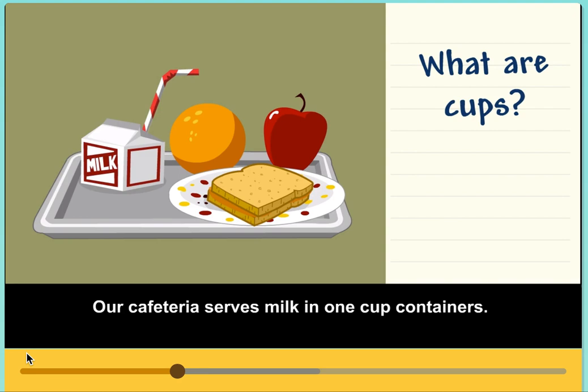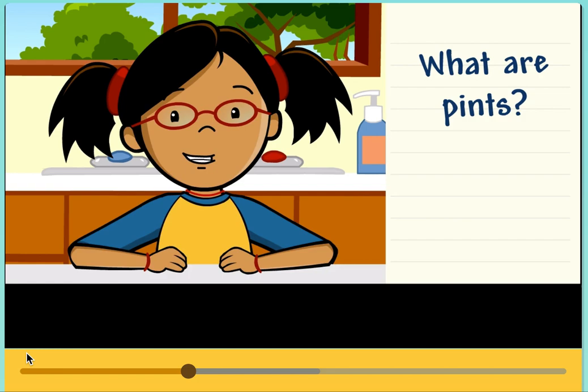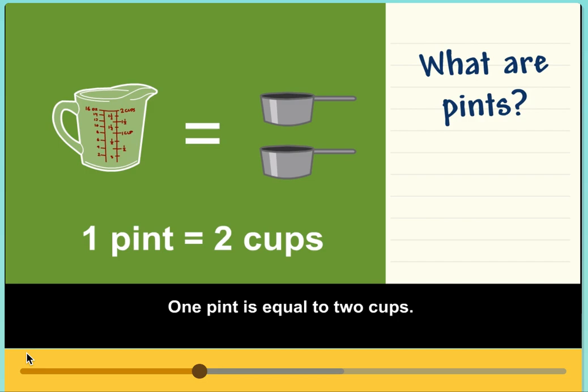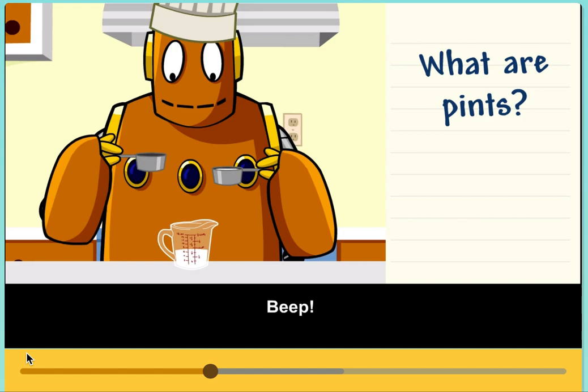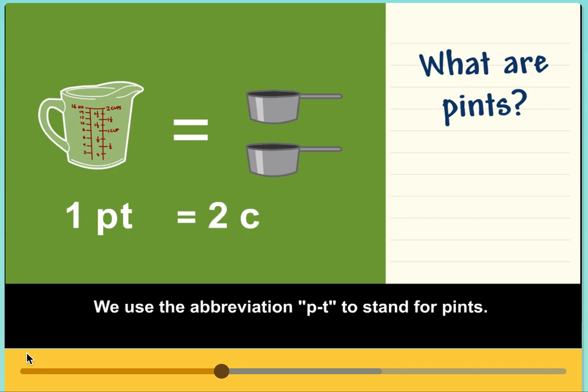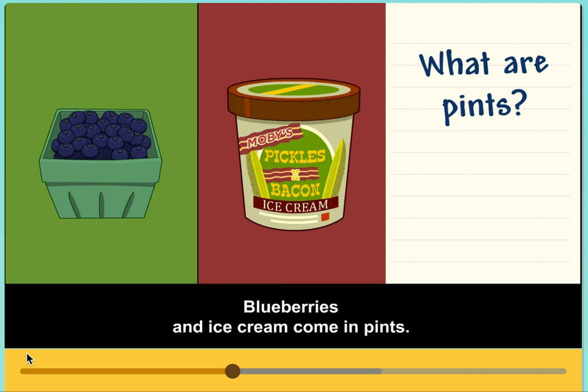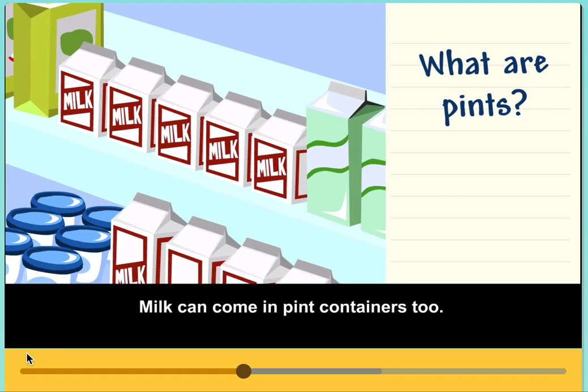What are pints? A pint is larger than a cup. One pint is equal to two cups. We use the abbreviation PT to stand for pints. Blueberries and ice cream come in pints. Milk can come in pint containers too.